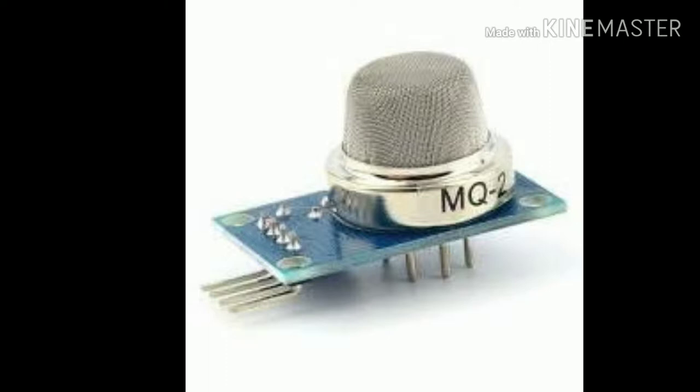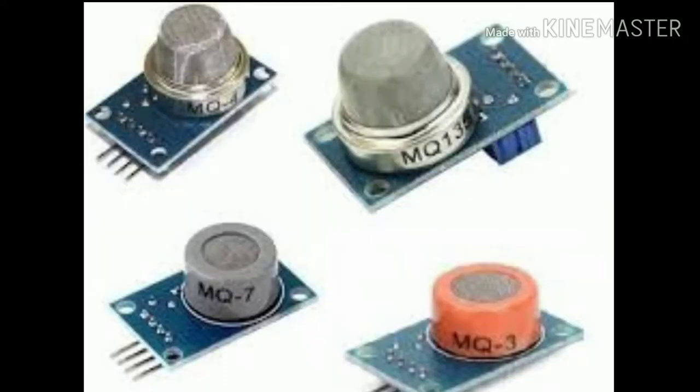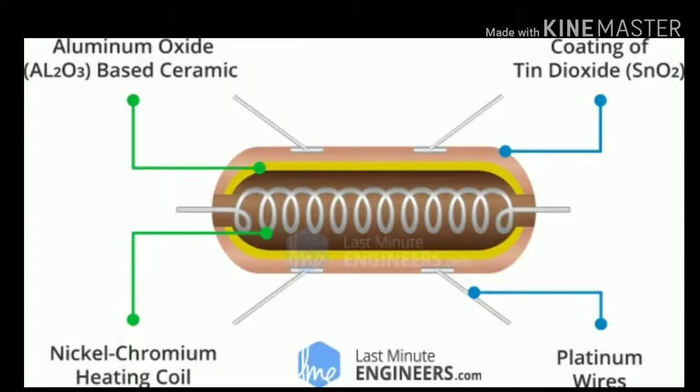MQ2 gas sensor can detect hydrogen gas, carbon monoxide gas, LPG, smoke, alcohol, propane and methane. Besides MQ2 gas sensor there are other series of MQ series which help us to detect various other gases. It can detect concentration of gas ranging anywhere from 200 to 10,000 ppm and its operating voltage is 5V. It has sensitive tin dioxide material whose conductivity increases with increase in gas concentration.